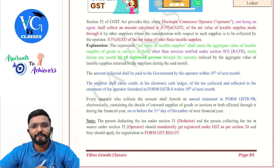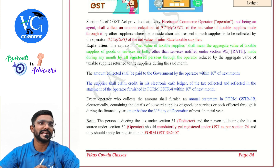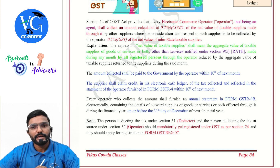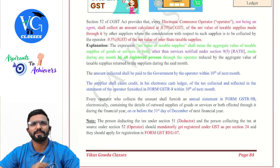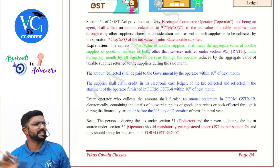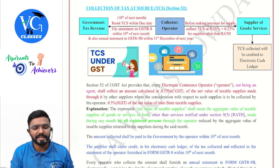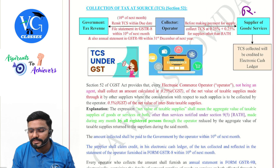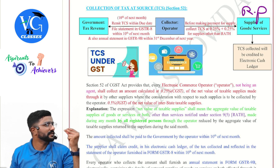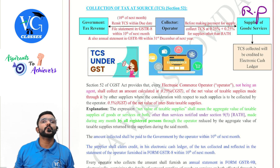The expression 'net value of taxable supply' means the aggregate value of taxable supplies of goods or services or both — other than services notified under section 9(5), i.e., RCM — made during any month by all registered persons through the operator, reduced by the aggregate value of taxable supplies returned to the suppliers during that month. So if there are any returns, TCS will not be collected on those. Also, the supplier must be a registered person — if the supplier is not registered, no TCS.